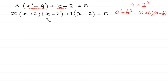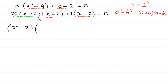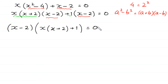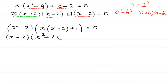Now, as you can see, x minus 2 is a common factor. So we factor out x minus 2 as a common factor, giving x minus 2 times x times x plus 2 plus 1 equals 0. Expanding, x minus 2 times x squared plus 2x plus 1 is equal to 0.